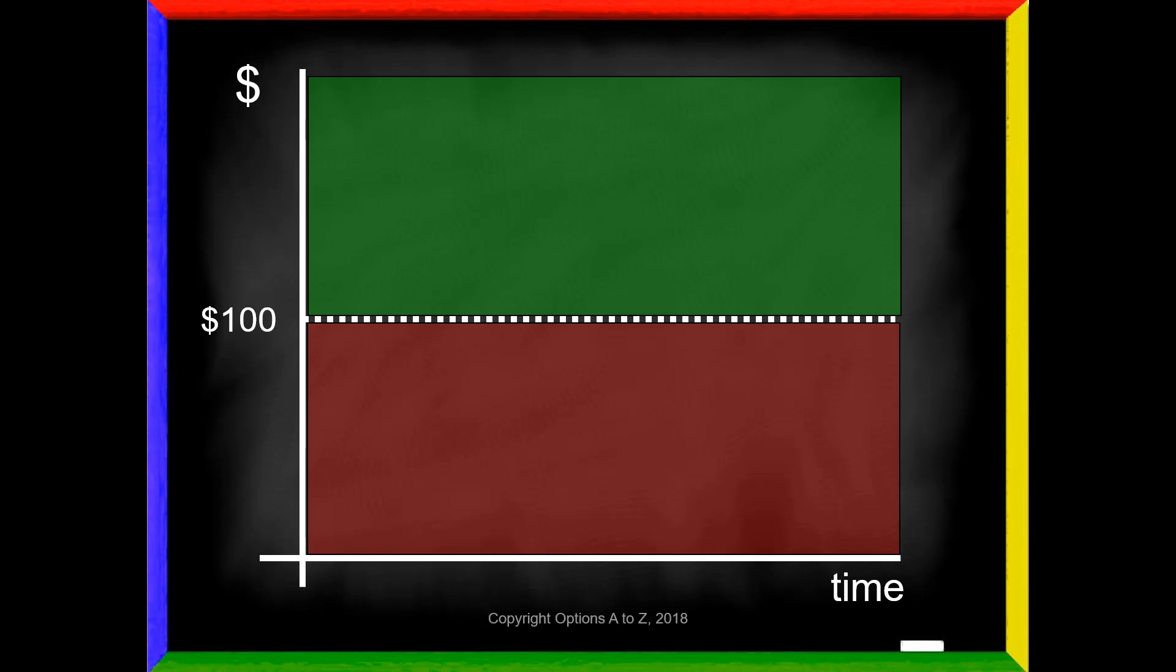However, if you buy that $100 call for $5, look what happens to your expiration break even. Now I want to emphasize this graph that we're looking at here only applies at expiration. And that means let's call it 3:59 PM Eastern time on expiration Friday. Just seconds left on the option's life. And that's important because you're going to find out at the end of this presentation, there are areas where we might be profitable. But for right now at expiration, we have a $105 break even. And that means we need the stock to be above $105 at expiration in order to profit.